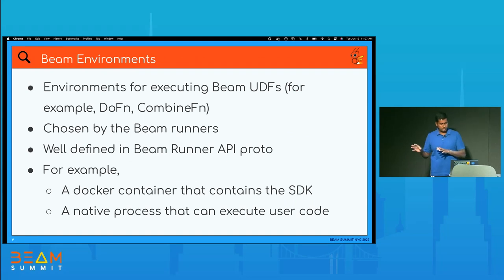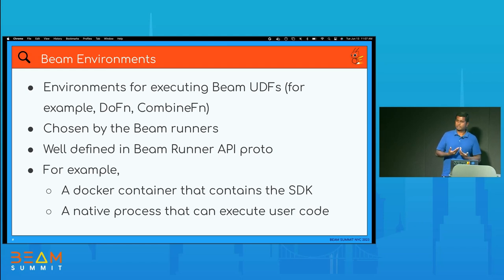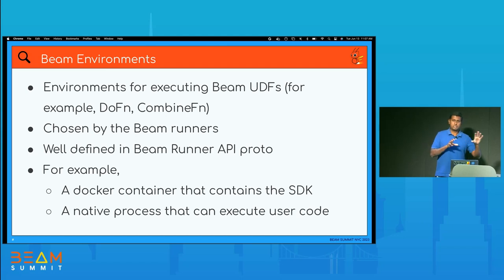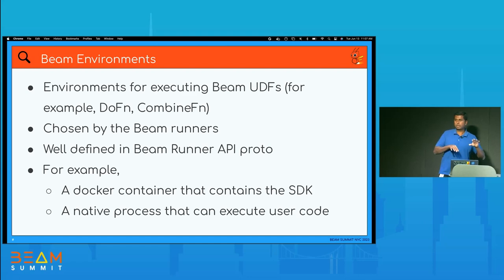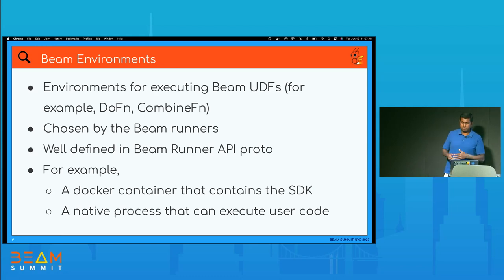I want to explain the concept of Beam environments. Beam uses environments to execute Beam UDFs — things like DoFns, CombineFns, etc. The runner can choose which set of environments they support; these are well-defined in the Beam Runner API proto. An example environment could be a Docker container, which would be the Docker environment type containing your SDK, or it can be a native process that can execute user code.